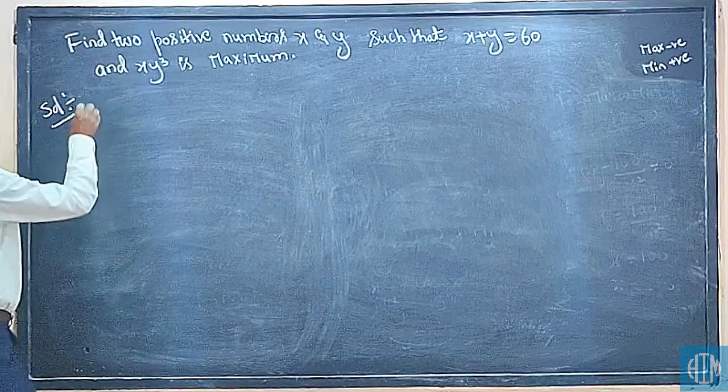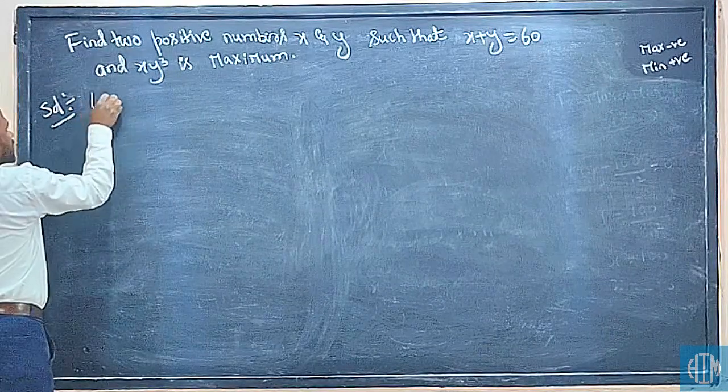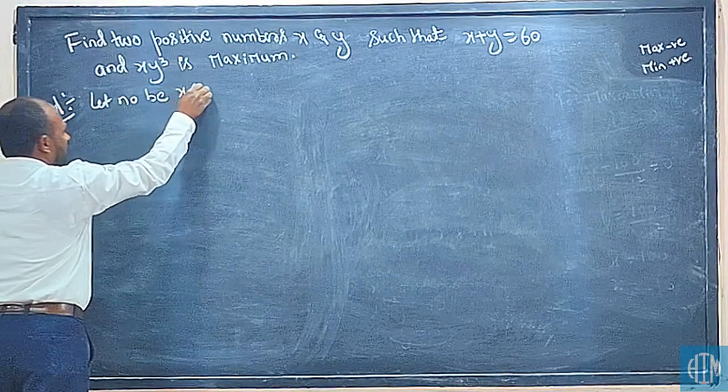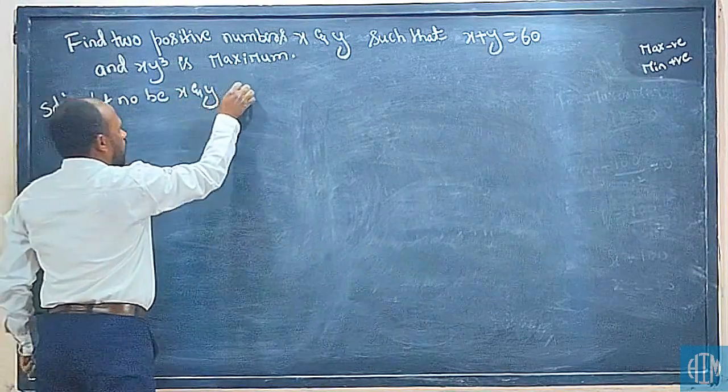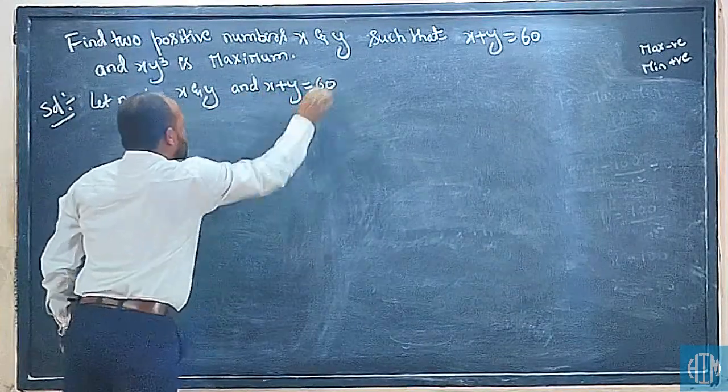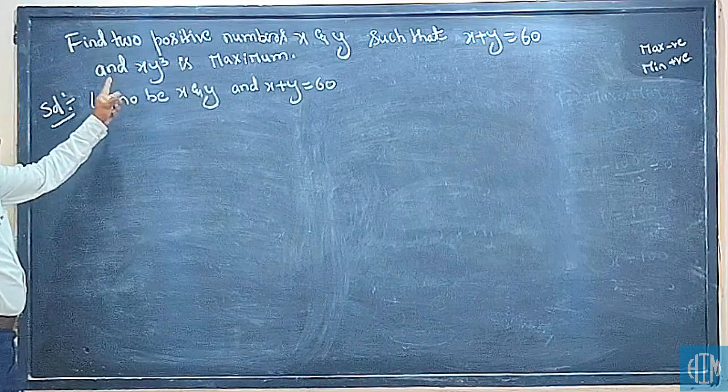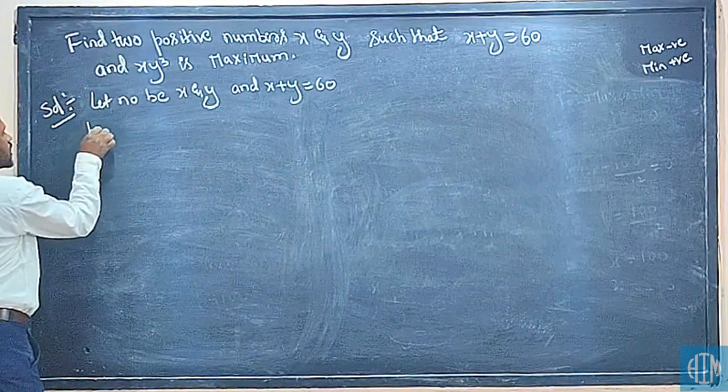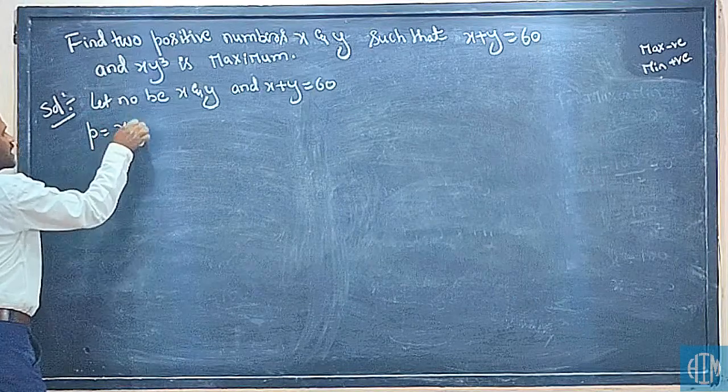Let the numbers be x and y. What do we have given? x plus y is equal to 60, and xy³ is maximum. Let P equal xy³. We have to find this maximum.